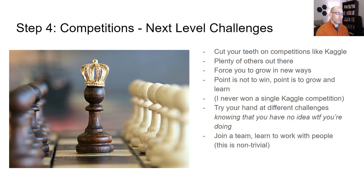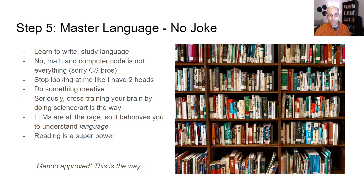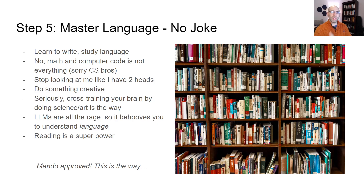Step five: master language. This is not a joke — learn to write and study language. I'm sorry to the die-hard computer science people, but math is not the be-all and end-all of everything. Purists in computer science and math often can't see the forest for the trees. Since large language models are all the rage right now, it behooves you to understand language — not just as a mathematical concept, but as it is to the human brain. Also, be creative. There is plenty of science on the value of cross-training your brain by doing both science and art.